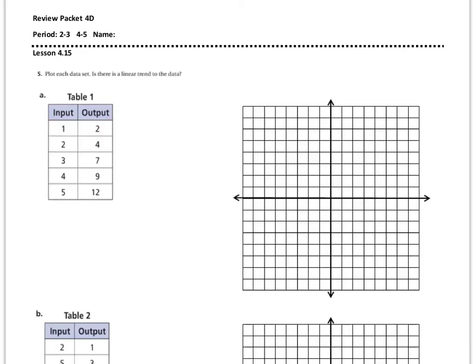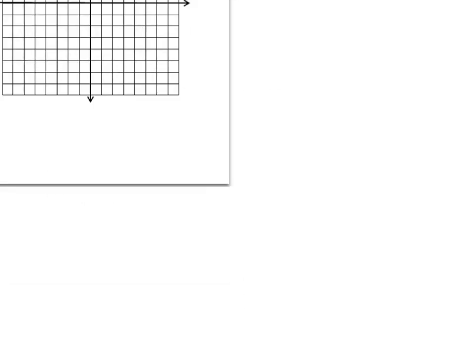So you just plot these points. The input is the x value and output is y value, and these are the coordinate pairs. Plot the points, and if it comes out linear, it is. It's linear, right?